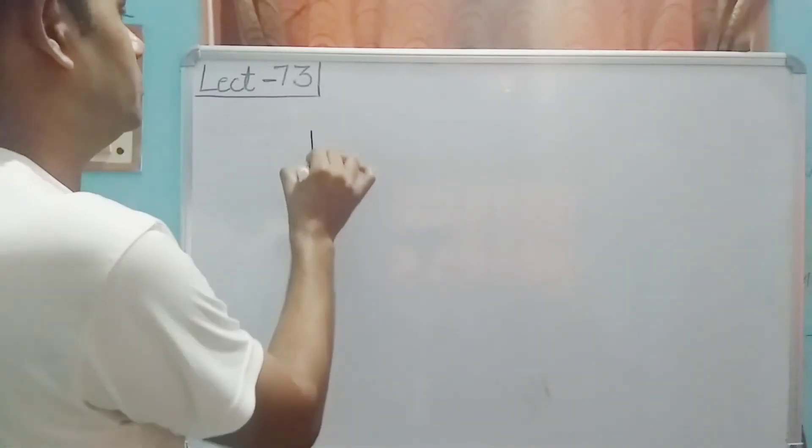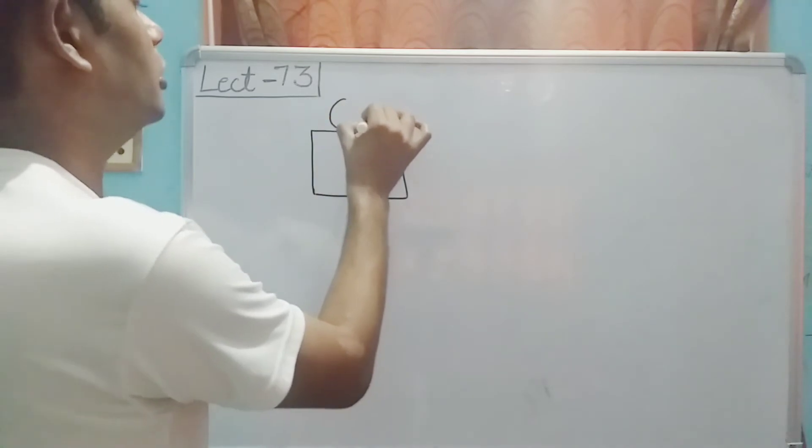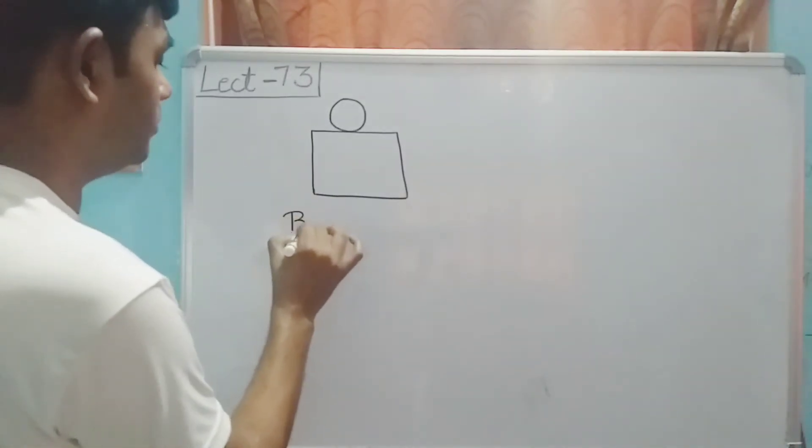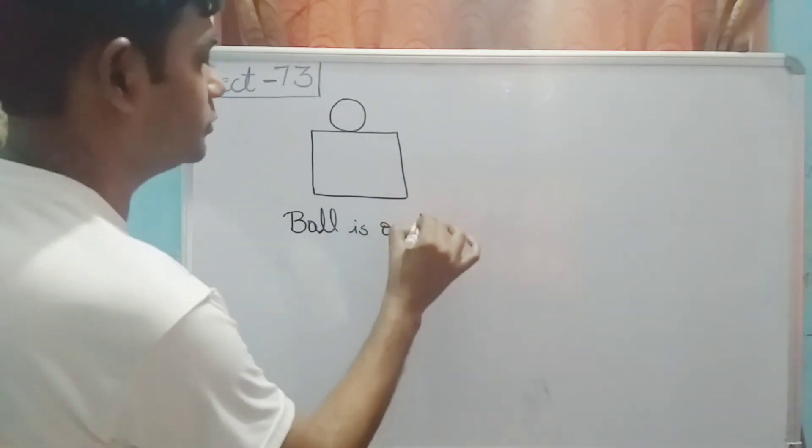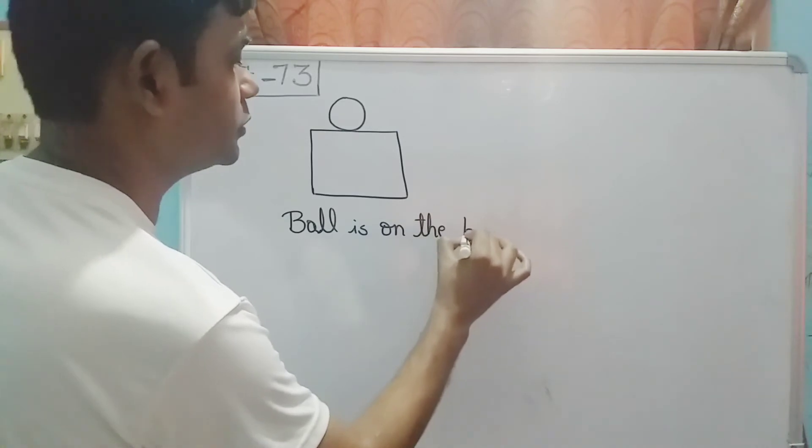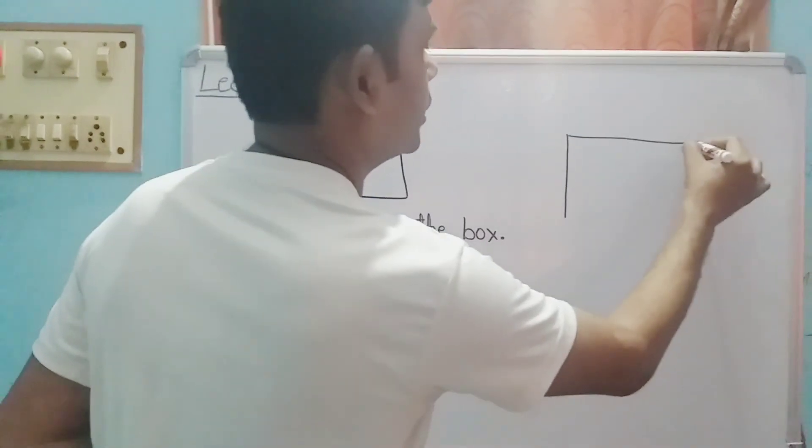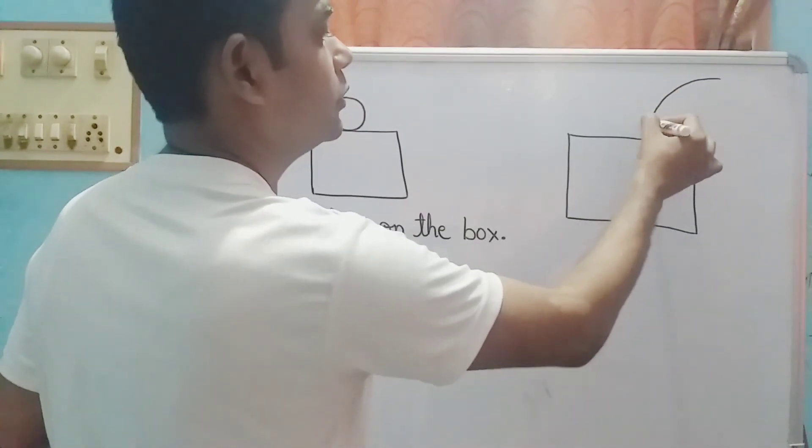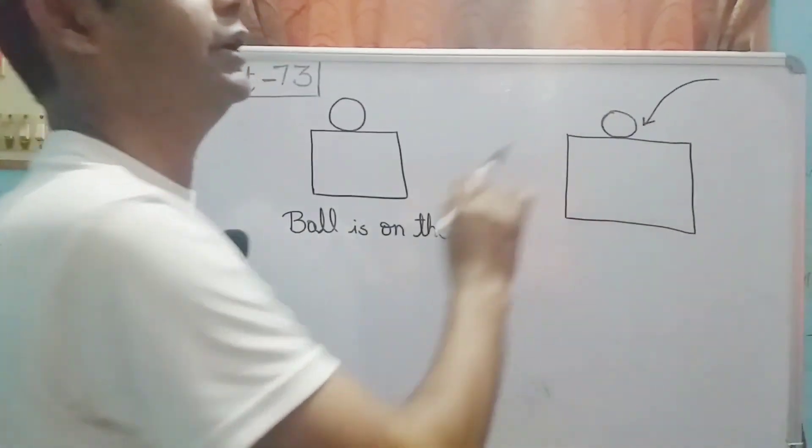Moving condition example now. We have seen the ball kept on the box. Now if we have a moving condition - the ball came and fell upon the box.